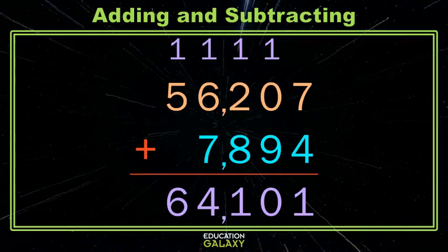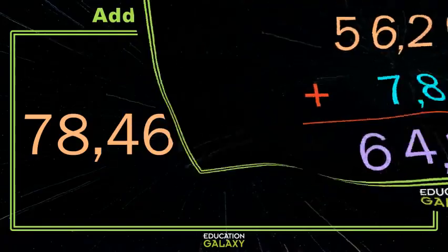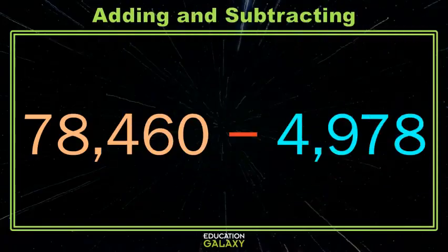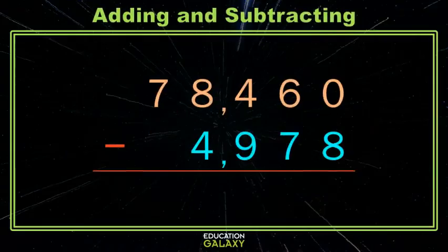Let's try a subtraction problem. Okay, here again it's given horizontally, we like that better if it's vertical, just line up your place values. Now you see here if we try and take eight away from zero we can't. We try and take seven away from six we can't. If we try and take nine away from four we can't. So what are we gonna do?